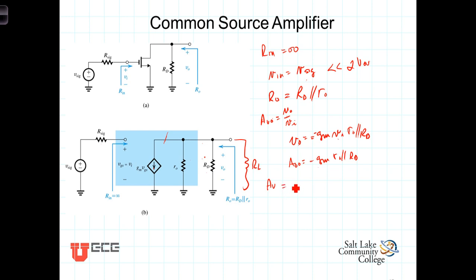We get then that A sub V, which is Vout over Vn with the load resistance, is equal to negative GM times R0 parallel R sub D parallel R sub L.